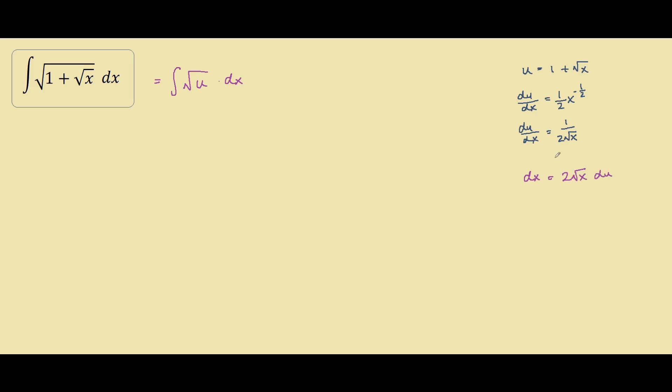We will be plugging this into our integral over here. So square root of u times dx, which is 2 square root of x du. Now as you can see, we still have an x here, we don't want that.